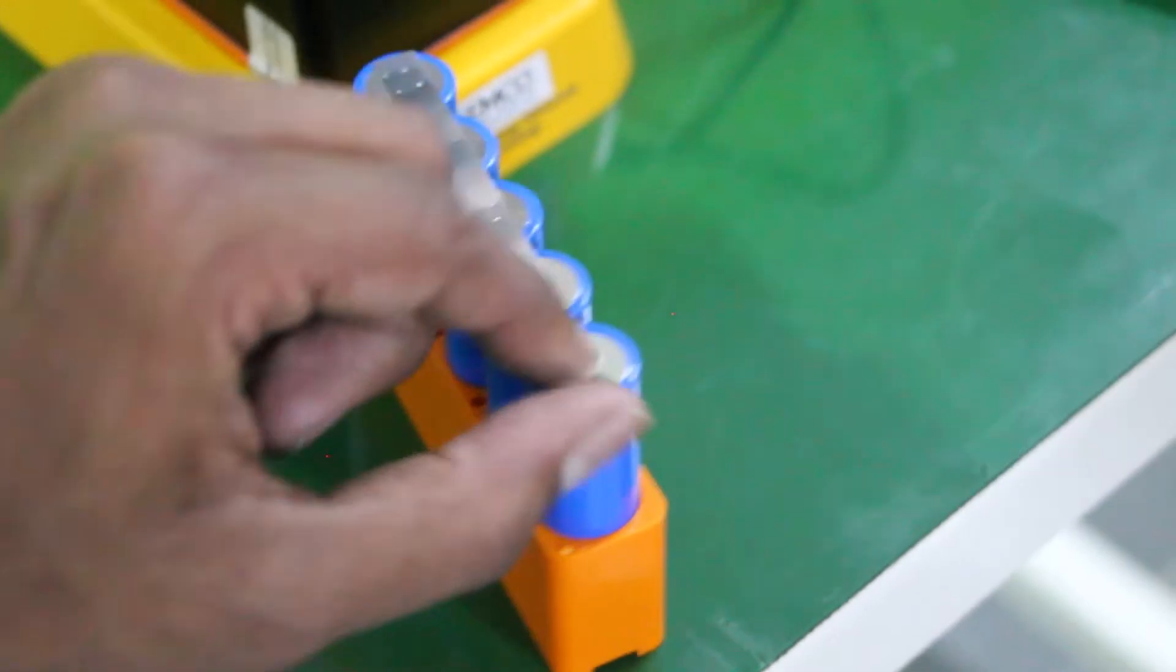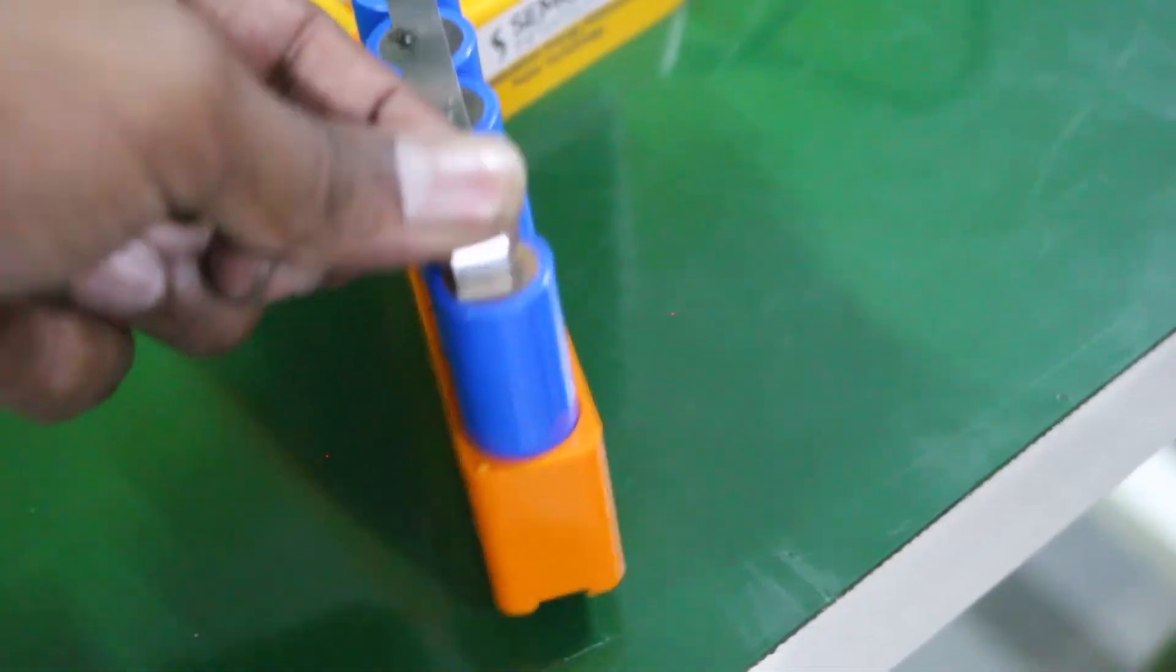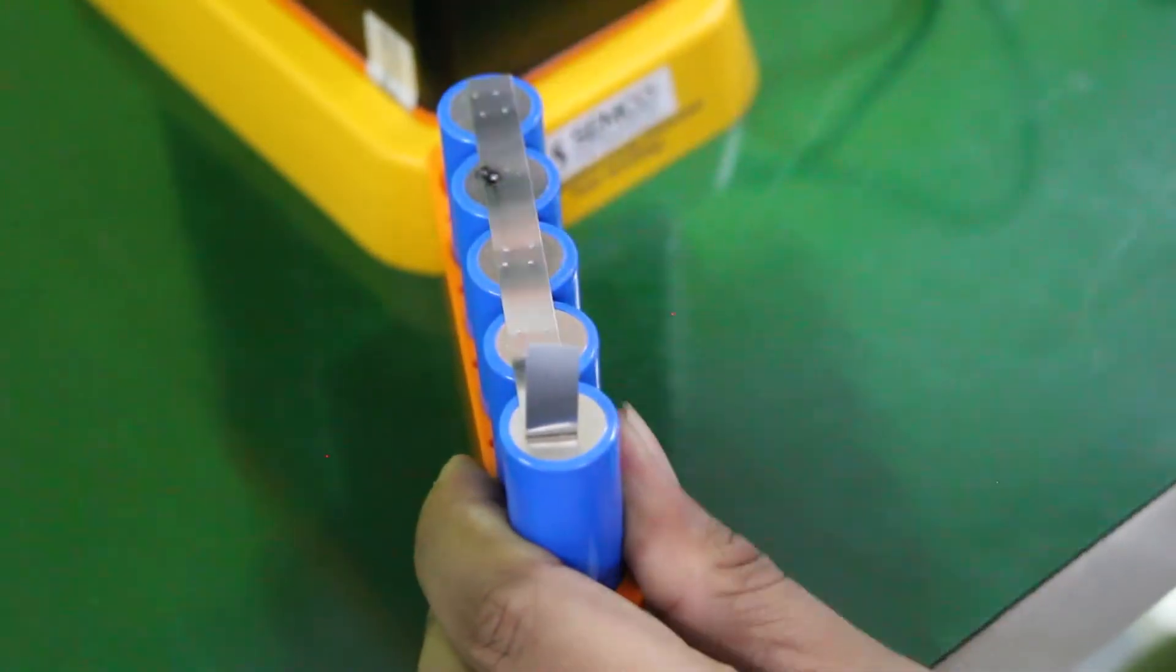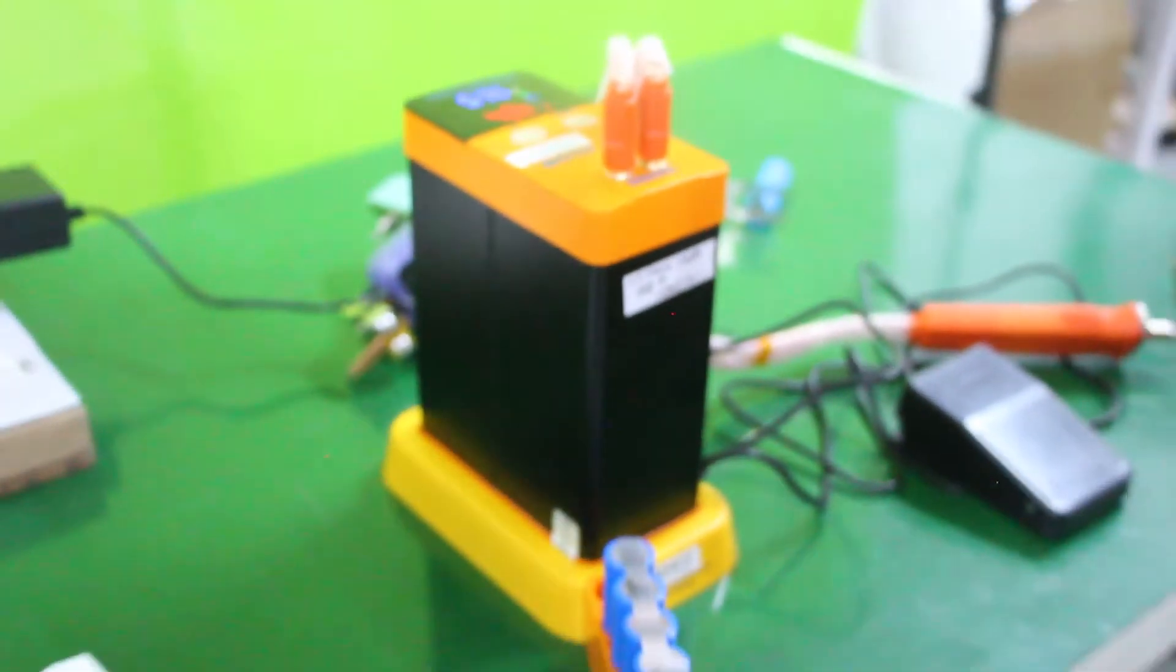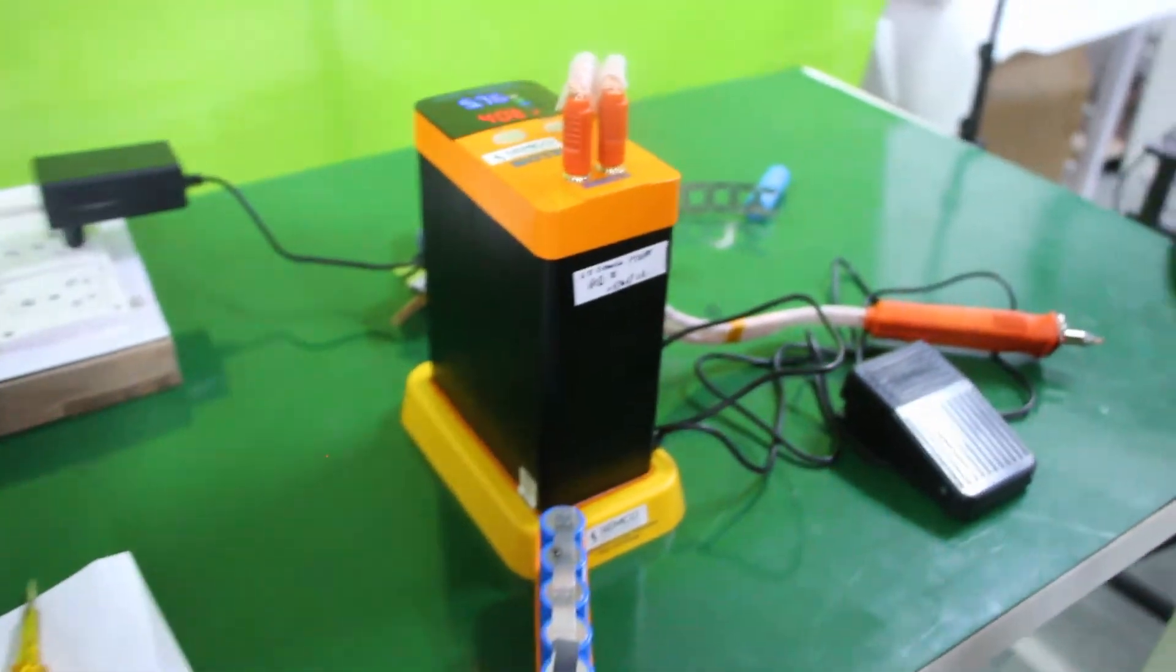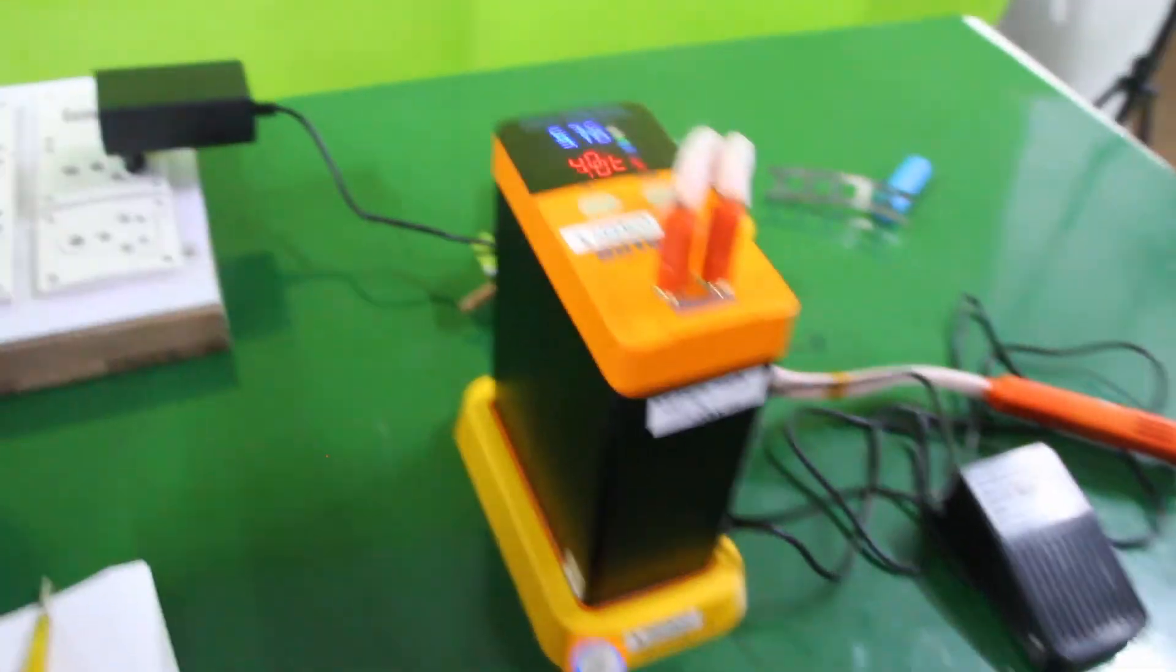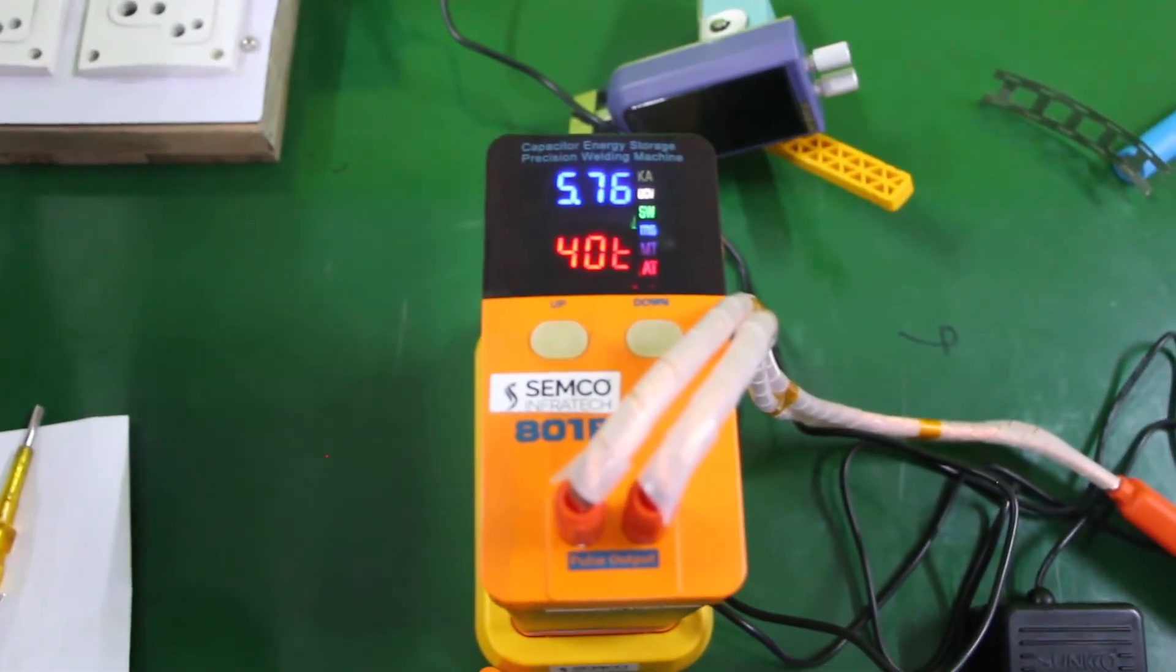As you can see, it works well. This is all about the Capacitor Energy Storage Precision Welding Machine model number 801B. You can use this in your lab setup.